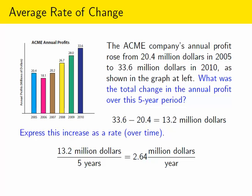This is what we call an average rate of change. Note that we're not claiming that the company's annual profit increased by $2.64 million each year. It definitely did not. If you look at this graph, there was even a year where the profits decreased. We're just saying that on average, this is how much it was changing each year.